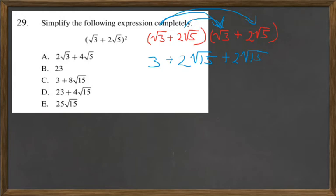And then we take 2 square root of 5 times 2 square root of 5 and that gives us 4 times the square root of 25.